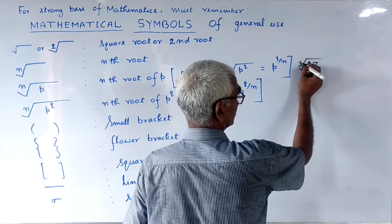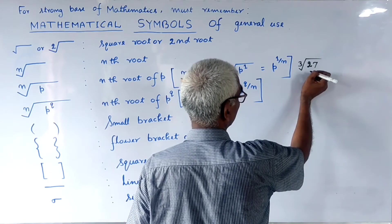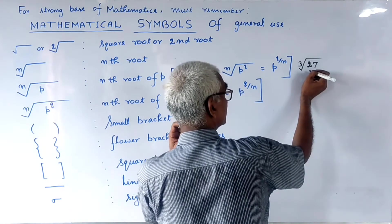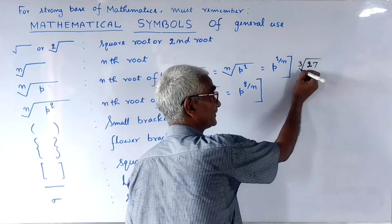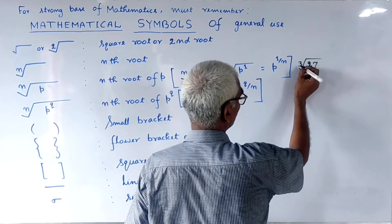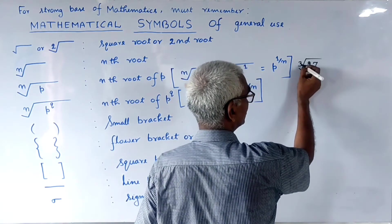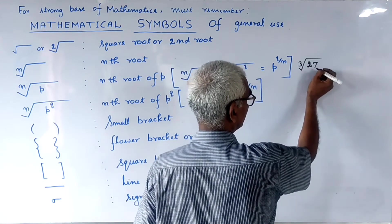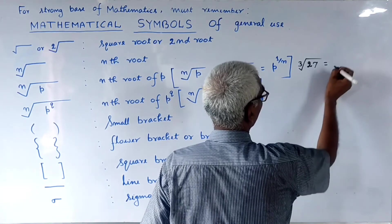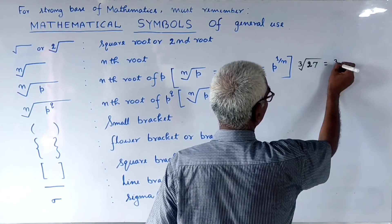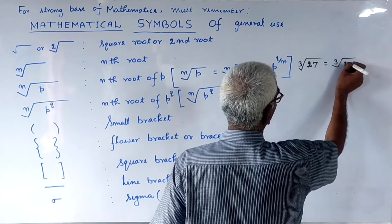For example, we will say the third root of 27. Now see how we will calculate this.